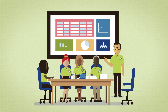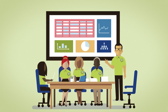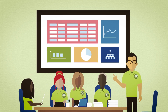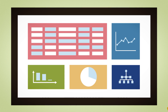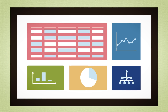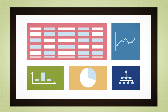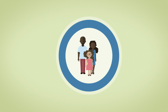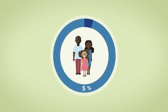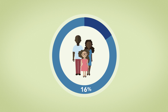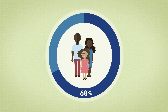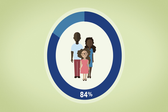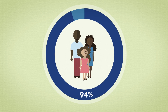They also modified the data system to enter additional data on the families as they moved through the licensing process. These data included the percentage of families who attended informational meetings, completed training, and initiated and completed the process.